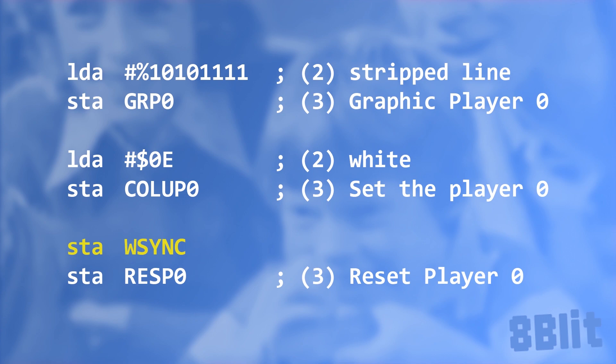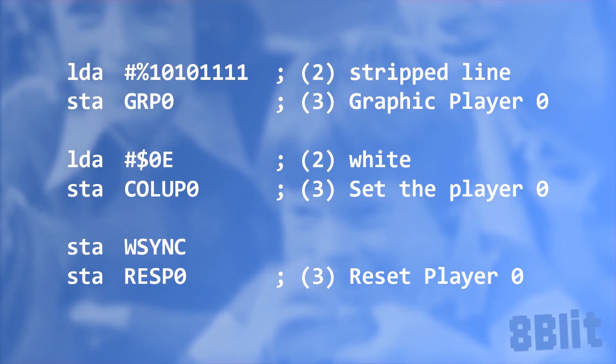Now we'll strobe the Reset Player 0 register. A strobe register is a trigger that is activated when any value is written to it, so we'll just store whatever value happens to be in the accumulator register. This will trigger the TIA to start writing our player graphics to the screen wherever the beam currently is on the scanline. More precisely, it will be drawn after the 6507 interprets our instructions and the TIA prepares to draw — this takes about five color clocks in all. Strobing Reset Player 0 right after a WSync sets the position of the graphic close to the left side of the screen.